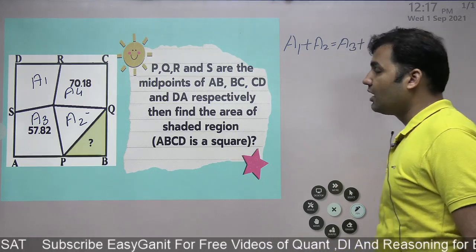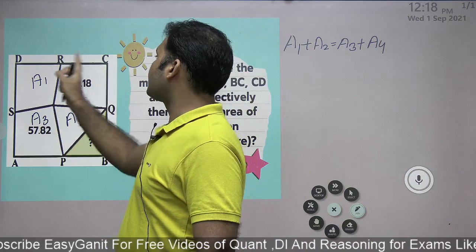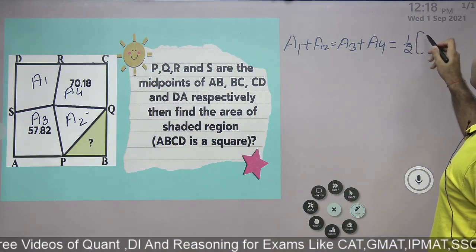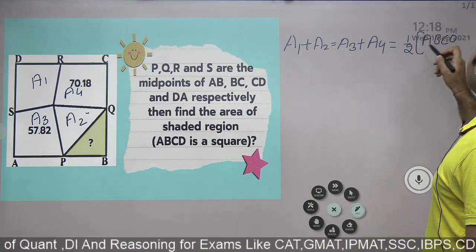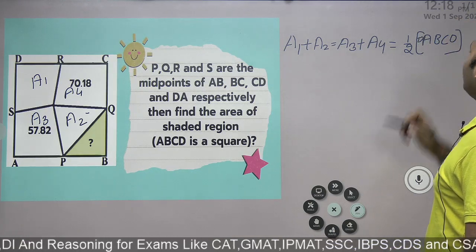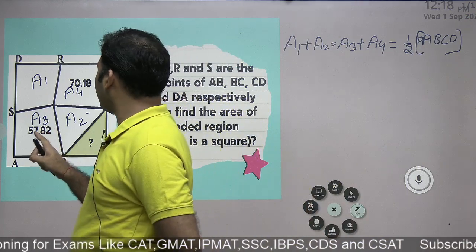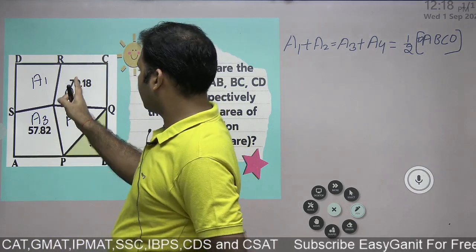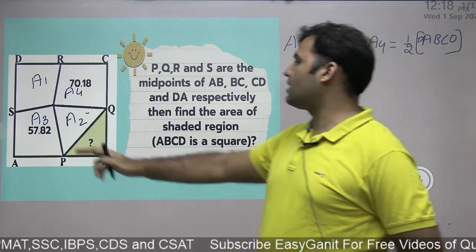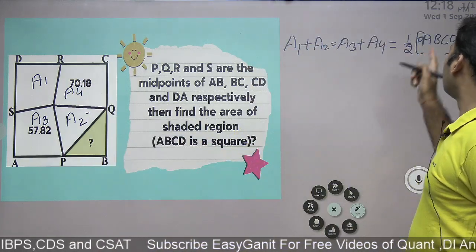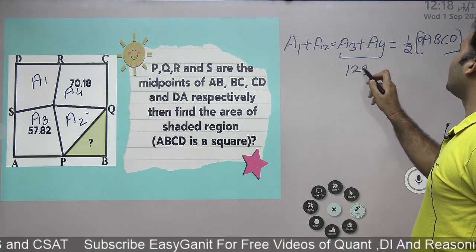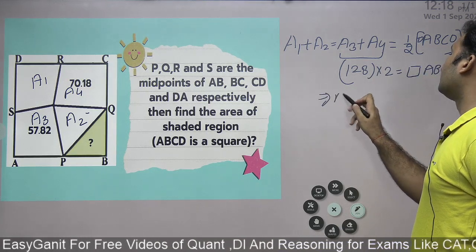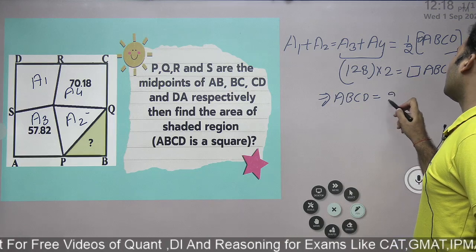Now, a1 plus a2 plus a3 plus a4 is the area of the whole square. So if a1 plus a2 equals a3 plus a4, each pair equals half the area of square ABCD. What is a3 plus a4? It is 57.82 plus 70.18, which comes out to be 128. So if this area is 128, the area of the whole square ABCD will be equal to 256.